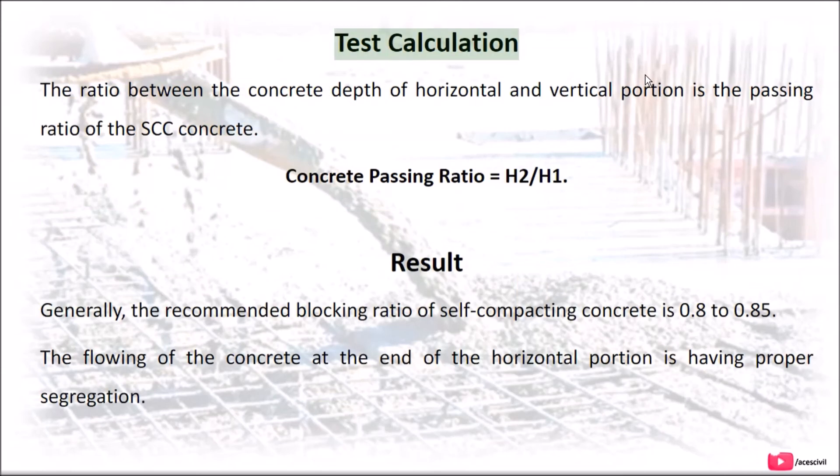Test Calculation: The ratio between the concrete depth of horizontal and vertical portion is the passing ratio of the SCC concrete. Concrete passing ratio equals H2/H1.